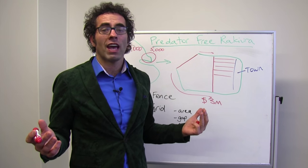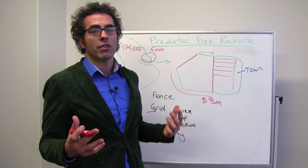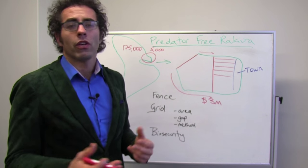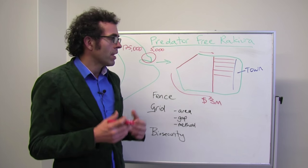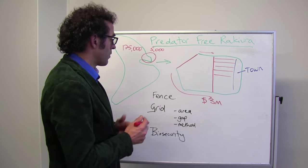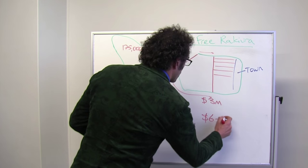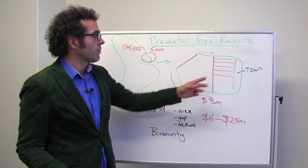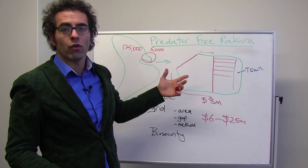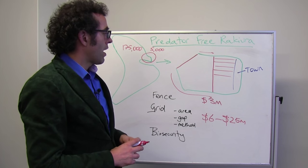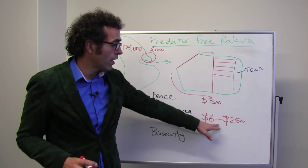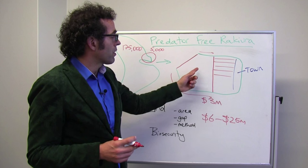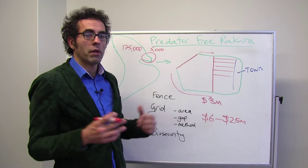It could be somewhere between 25 and 100 meters. So that makes a big difference to the cost again for that grid area. And lastly, what method are we going to use? Are we going to use bait stations or traps? That has an impact on the cost as well. All in all, the cost could be somewhere between $6 and $25 million to go through this whole area and set up a grid for all of those rats, possums, and cats to get caught. So quite a big unknown there, particularly because of the Kiore and because we don't know exactly how big an area we're going to be trapping within.